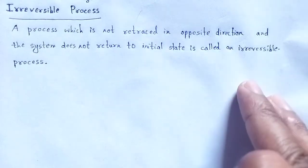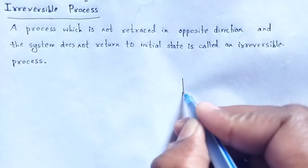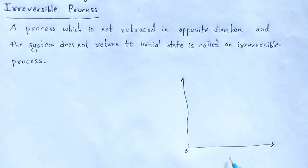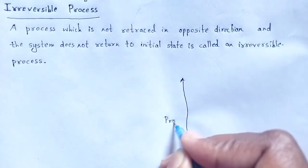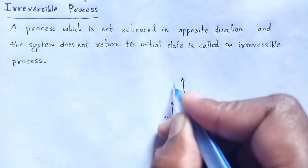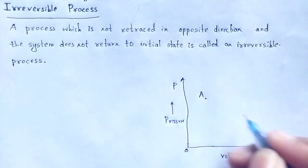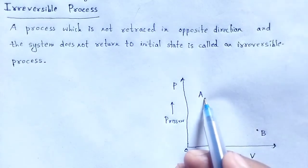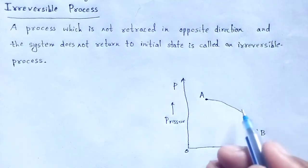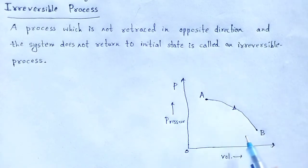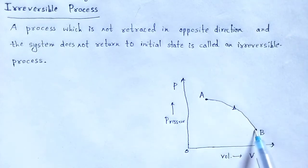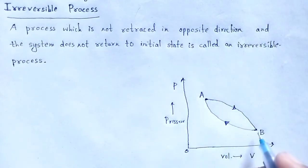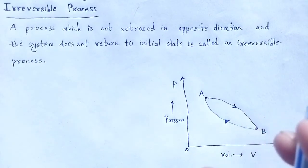Let me draw the PV diagram to understand what is happening. Here on the x-axis is volume, and on the y-axis is pressure. Let the thermodynamic process proceed from point A to point B. When we retrace that process, it does not follow exactly the same path — the path changes. From B to A, the path is different. This type of thermodynamic process is said to be an irreversible process.